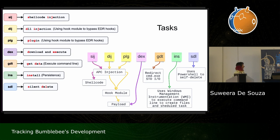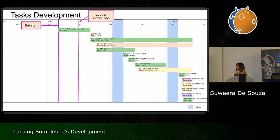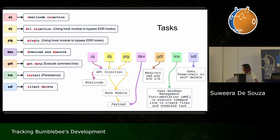Now let's talk about tasks. On the left-hand side you can see descriptions of what those tasks mean, and on the right-hand side a high-level overview of how they're executed. Our first four tasks are responsible for running the payloads — the first three inject the payloads into a process using APC queue code injection, which is also an EDR evasion technique I'll discuss on a later slide.